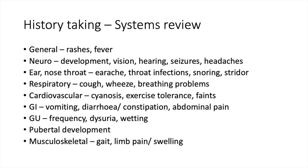Respiratory system: ask about cough, wheeze, and breathing problems. Cardiovascular: ask about cyanosis — the child turning blue — exercise tolerance, and faints, which might indicate heart defects like tetralogy of Fallot. Gastrointestinal: vomiting, diarrhoea, constipation, abdominal pain. Genitourinary: urinary frequency, pain on urination (dysuria), and bedwetting. Pubertal development, and musculoskeletal: how are they walking? Any limb pain or swelling?